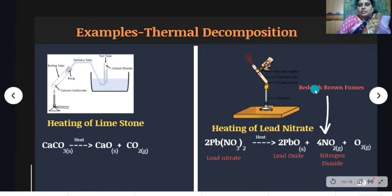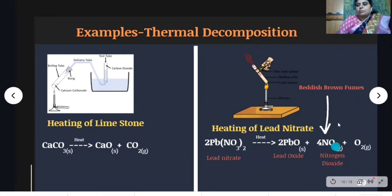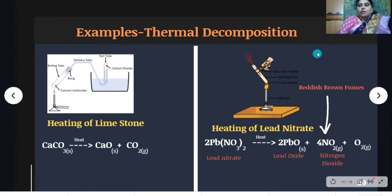One more example: heating of lead nitrate. When lead nitrate is taken in a boiling tube and strongly heated, reddish brown fumes are evolved due to the liberation of nitrogen dioxide. The reddish brown fumes are nothing but nitrogen dioxide. When lead nitrate is heated strongly, it forms lead oxide, nitrogen dioxide, and oxygen — three products are formed. A single compound breaks down into two or more products in the presence of heat, so this is called a thermal decomposition reaction.